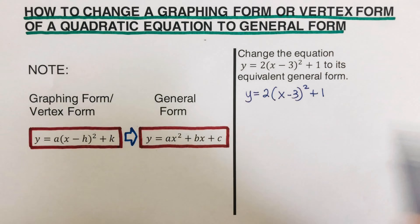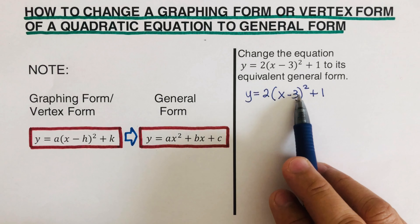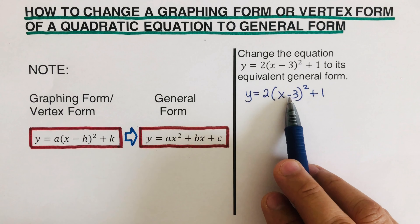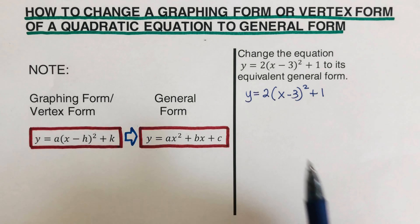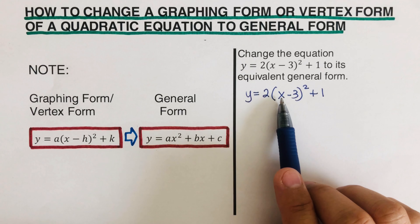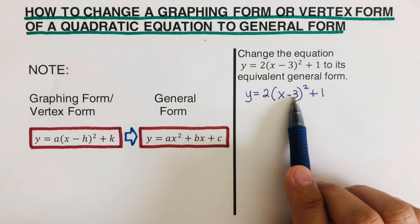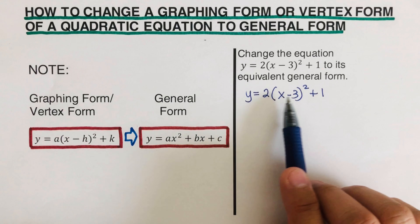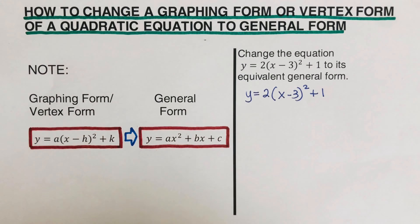The first thing we're going to do is expand x minus three squared. Please take note of this, because others would miss this part — they think they're going to distribute the two to both x and negative three. That is not correct. We can't distribute the two yet because the binomial is being squared first.